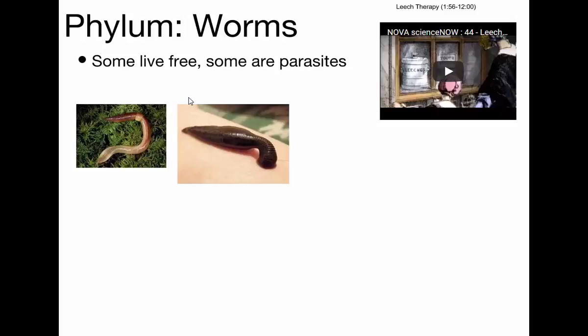Here's another one — a leech. Leeches are also segmented worms like an earthworm, and they live in the water. They are parasites that temporarily attach to an animal. The large sucker holds them onto the animal like a suction cup, and then the narrow end is where they bite. Their saliva has special chemicals that stop the blood from clotting and act as a painkiller so the animal doesn't know it's been bitten. They consume the blood until they're full, then detach and digest.